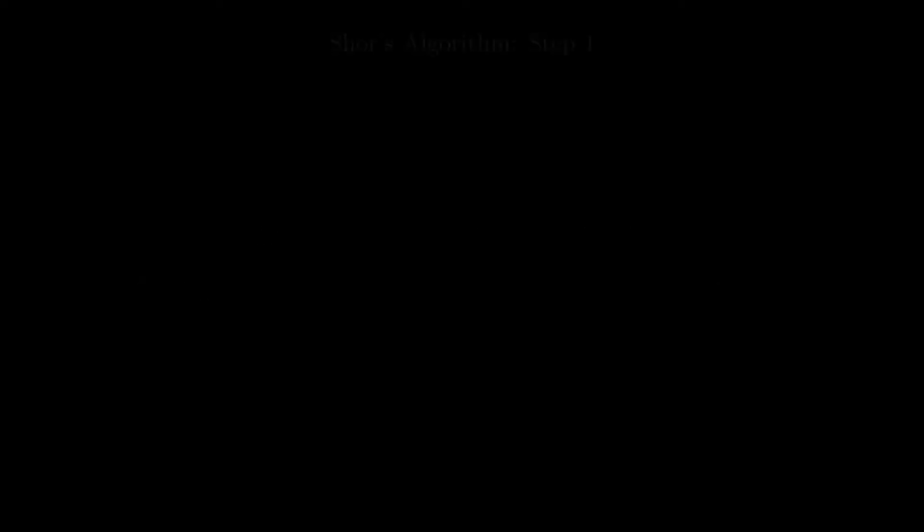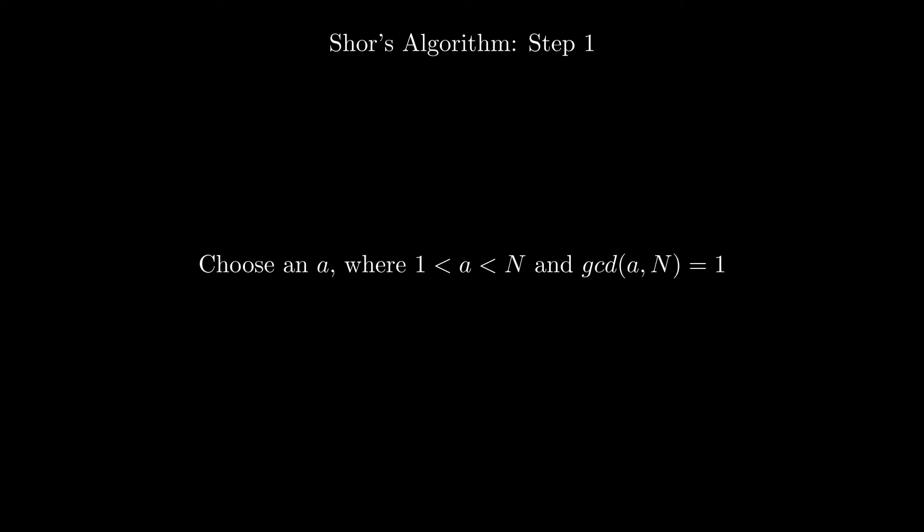First, we choose an a that is between 1 and N, and the GCD of a and N is 1, so a and N share no common factors. Next we do the quantum step, but before that, we will look at some number theory.